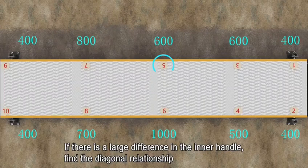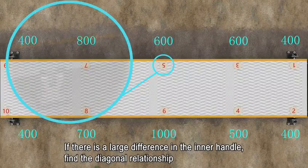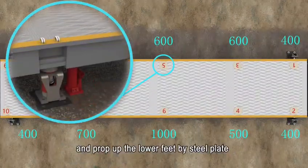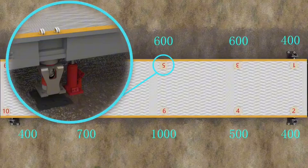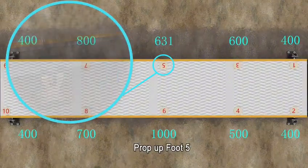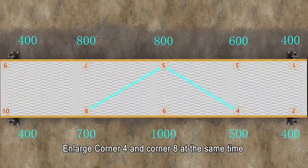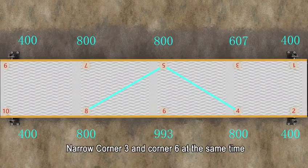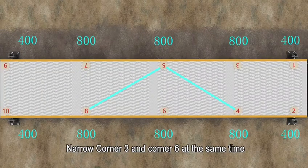If there is a large difference in the inner handle, find the diagonal relationship and prop up the lower feet by steel plate. Prop up foot 5. Enlarge corner 4 and corner 8 at the same time. Narrow corner 3 and corner 6 at the same time.